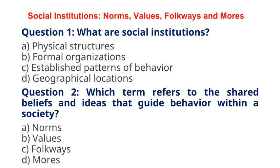Question 1. What are social institutions? A. Physical structures. B. Formal organizations. C. Established patterns of behavior. D. Geographical locations. The correct answer to question 1 is option C, Established patterns of behavior. Explanation: Social institutions are established patterns of behavior and relationships that are accepted, expected, and valued by society.